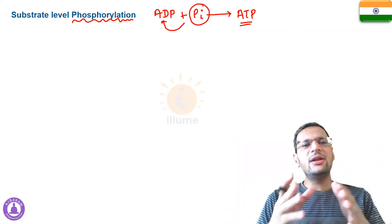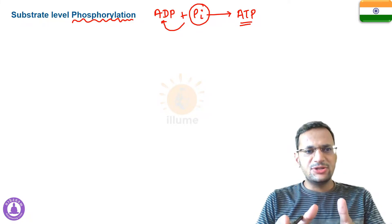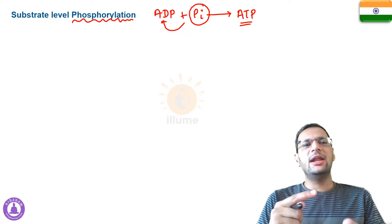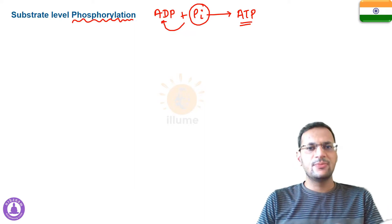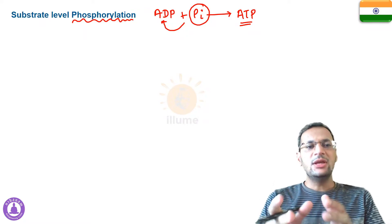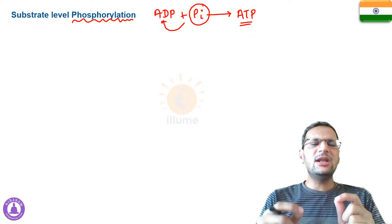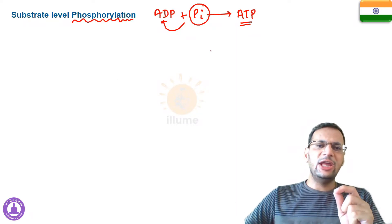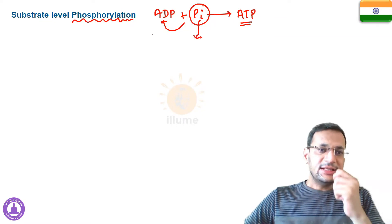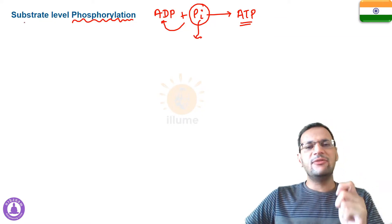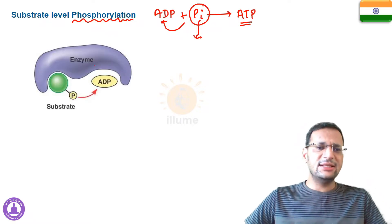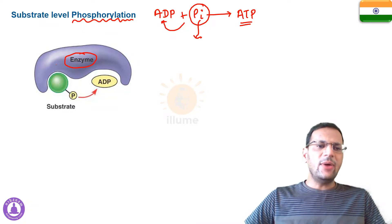You must have studied different kinds of phosphorylation in biology — oxidative phosphorylation, photophosphorylation, and now substrate level phosphorylation. The difference among the three is the source of the inorganic phosphate. In substrate level phosphorylation, this inorganic phosphate comes from a substrate — from a different substrate — that's why it is called substrate level phosphorylation.